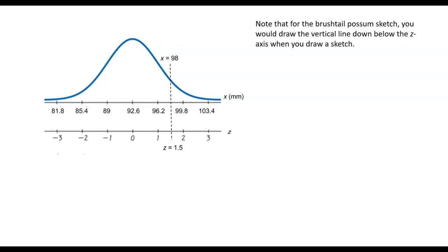First of all, note that for the sketch, you would draw your vertical line so that it goes above the curve and down below the z-axis when you draw the sketch.